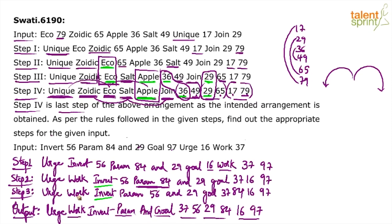There will be about two more steps after this. You can work those out yourself using the same process. It's worth spending around three minutes on the full arrangement since it can earn you five marks. Just follow the process and you'll get there.